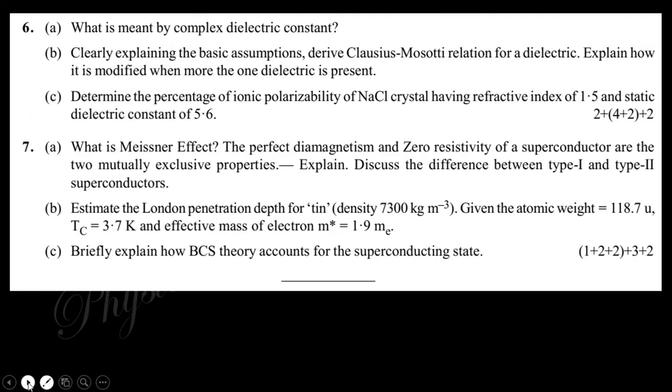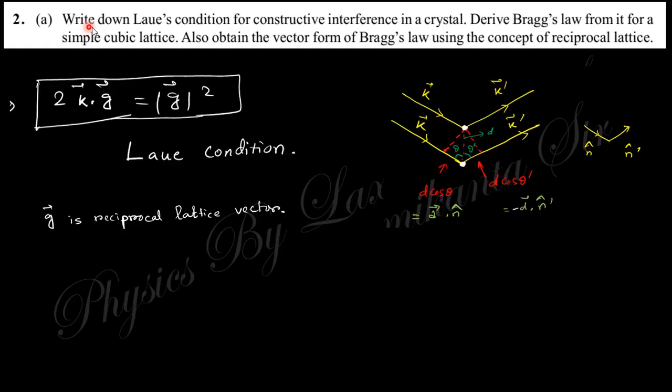Let's start. The first question says write down Laue's condition for constructive interference in a crystal. If you consider the crystal with the lattice plane like that, the incoming wave vector is k and the reflected vector is k prime, and the interference is produced due to the path loss or path difference between these two waves.